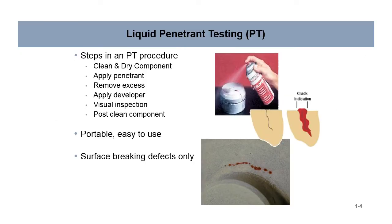Here's a quick overview of where we're going. Steps in the PT procedure: clean and dry the component, apply penetrant, remove excess, apply developer, visual inspection, and then post-clean the component. Advantages: portable and easy to use, detects surface breaking defects only.